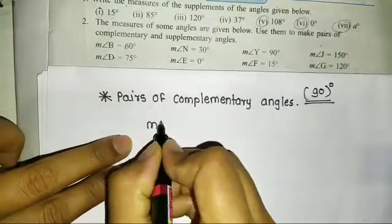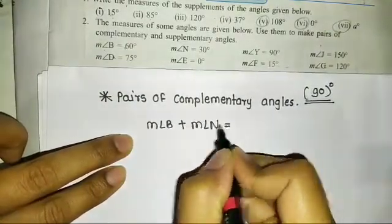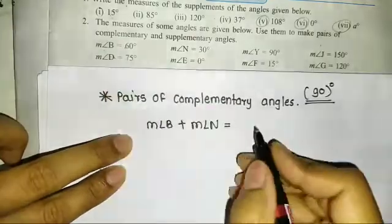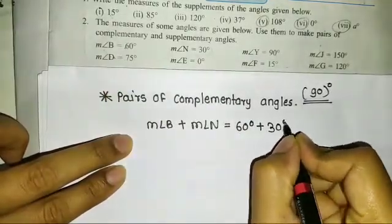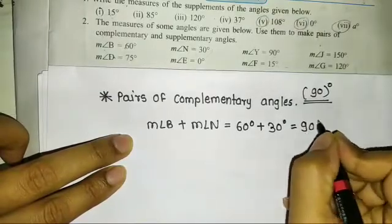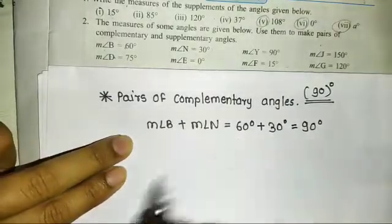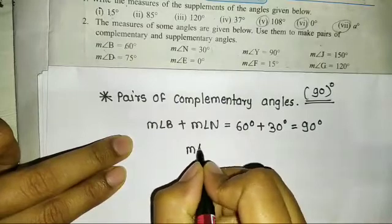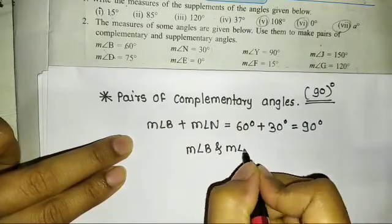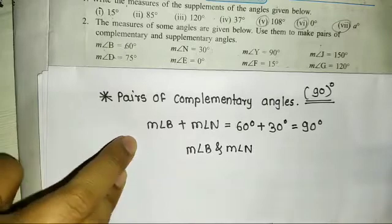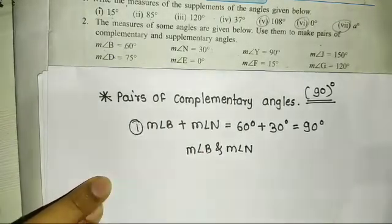Measurement of angle B plus measurement of angle N: B is 60 degrees, N is 30 degrees, and 60 plus 30 is 90 degrees. So, angle B and angle N form the complementary angle pair. This is the first pair.